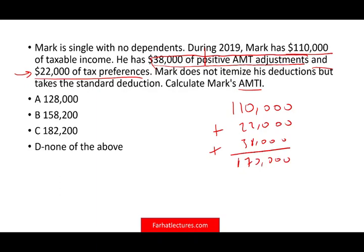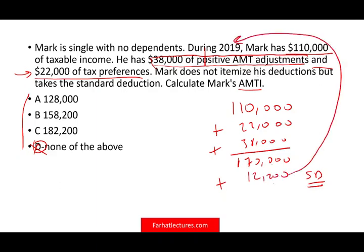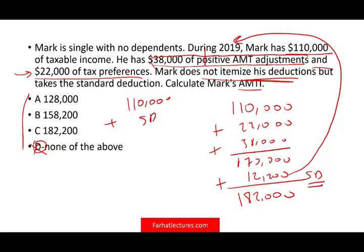I wrote this question this way on purpose. You look at the answers, you don't see $170,000, and you may go with 'none of the above' — that's not correct. What's missing is the standard deduction. The standard deduction is $12,200 for 2019. Don't forget to add back the standard deduction because he does not itemize. So the first thing you do, once they say he doesn't itemize, is take $110,000 plus the standard deduction, then add preferences and AMT adjustments. Be careful.